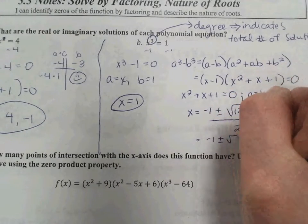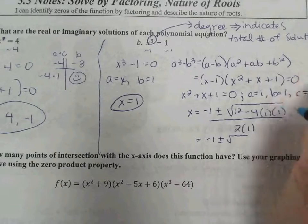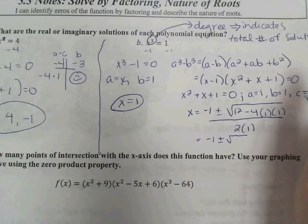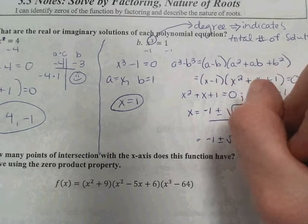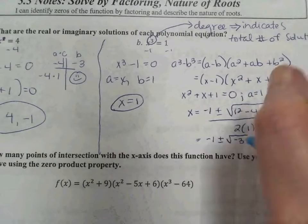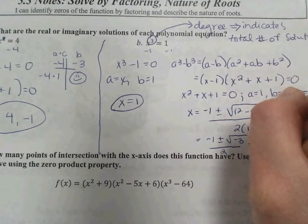So we have negative 1 plus or minus the square root. Remember, we find the value of the discriminant. 1 minus 4 is negative 3. Negative 1 over 2.